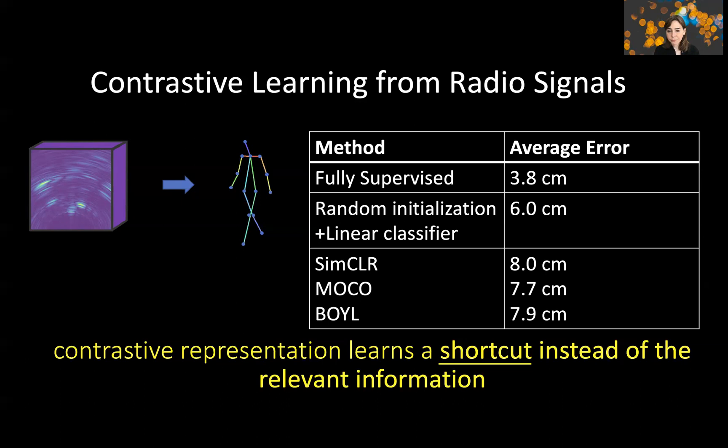The rest of this talk I'm going to tell you more about this shortcut problem, show you an idea for a solution to address this problem, and then show you how that improves the results significantly. It's easier to talk about contrastive learning in the context of images, because then you can visually see the images themselves and the information.